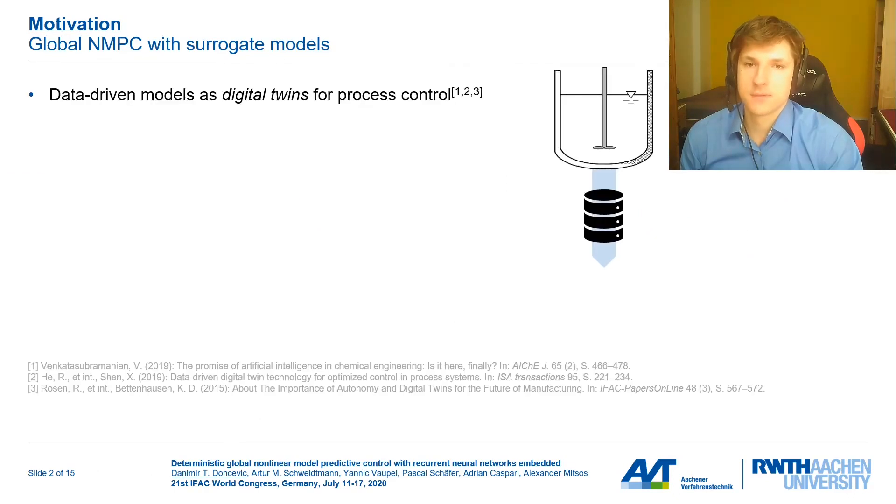Recently, data-driven surrogate models are being used a lot in process control, for example in the context of having a digital twin for optimizing process design and controllers. The advantages of data-driven models are threefold. A: They do not require full mechanistic knowledge of a process. B: They can be obtained straightforwardly from process data with lots of training frameworks available. And C: Usually there is also lots of data available from measurements and monitoring of the process.